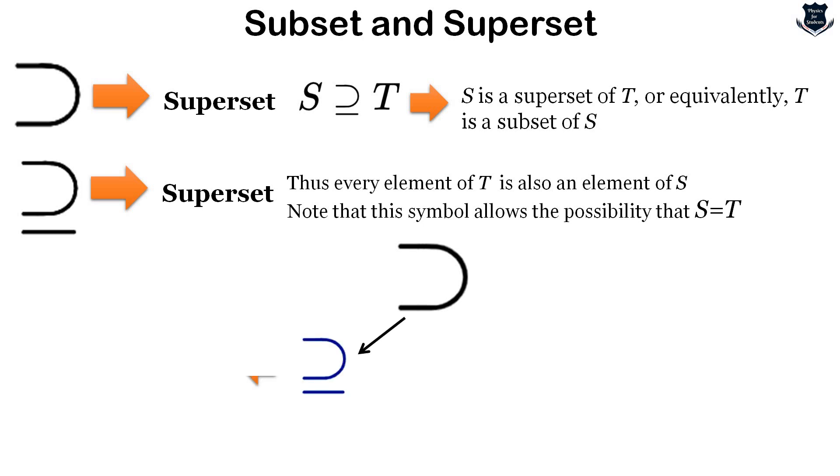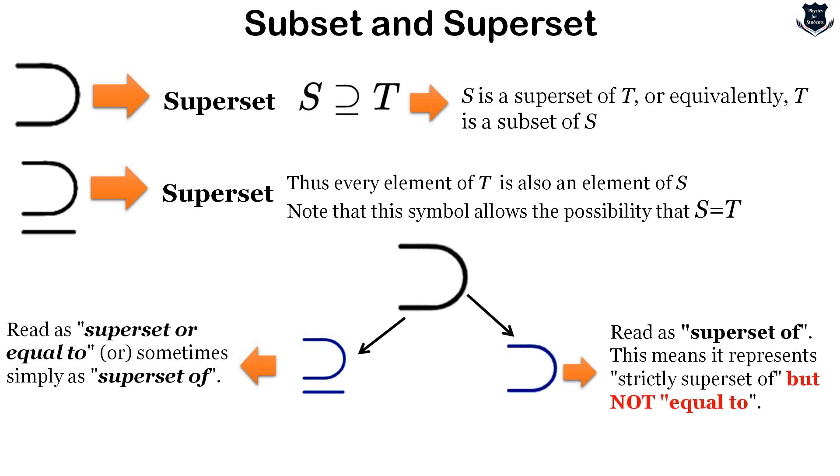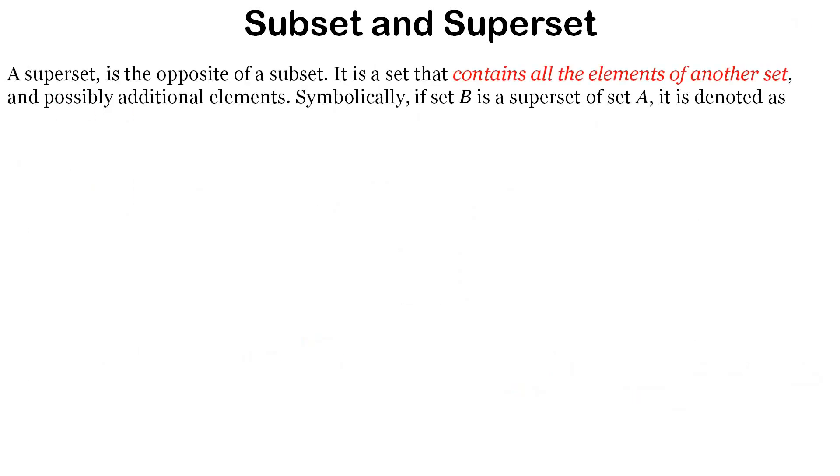The second symbol from the left allows the possibility of equality, while the first doesn't. I would request you to go to my previous video on problems and confusions with set symbols, where you'll see this sign means superset or equal to, whereas this sign means strictly superset but not equal to. When there's an equal to condition, we put a straight line with the corresponding superset symbols.